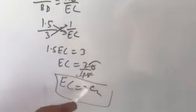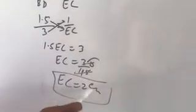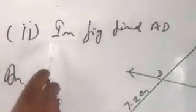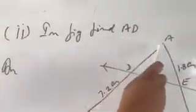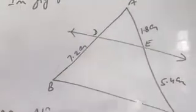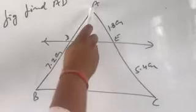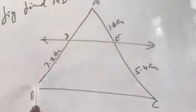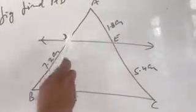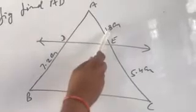EC equal to 2 centimeter. Now second part, in figure find AD. ABC is a triangle, DE parallel to BC. Find AD. Given: BD equal to 7.2 centimeter, AE equal to 1.8 centimeter, EC equal to 5.4 centimeter.